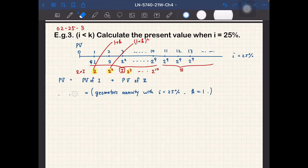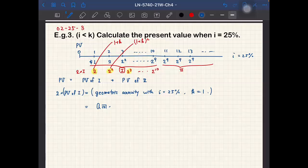Okay, so then this is the 10 year annuity at J, where J is equal to i minus K over 1 plus K. And i is 25% and K is 1.